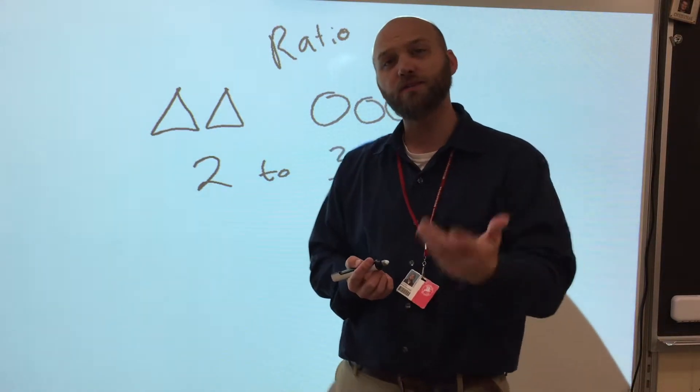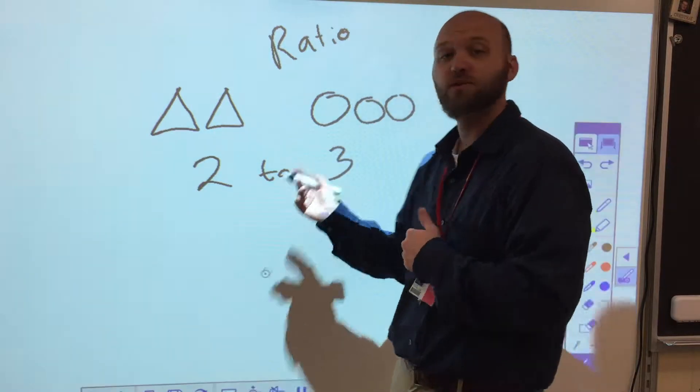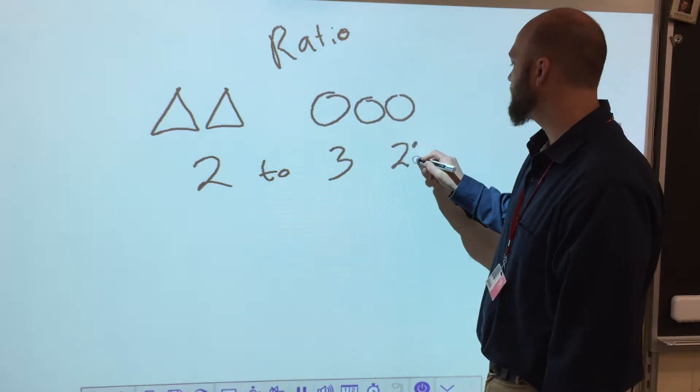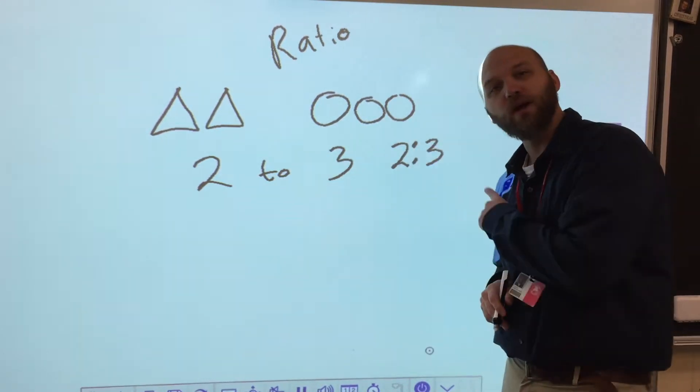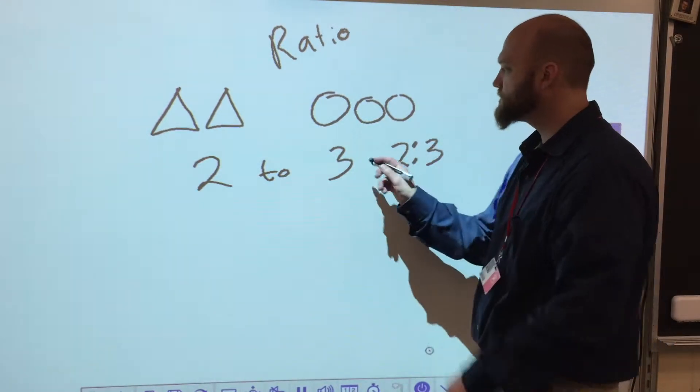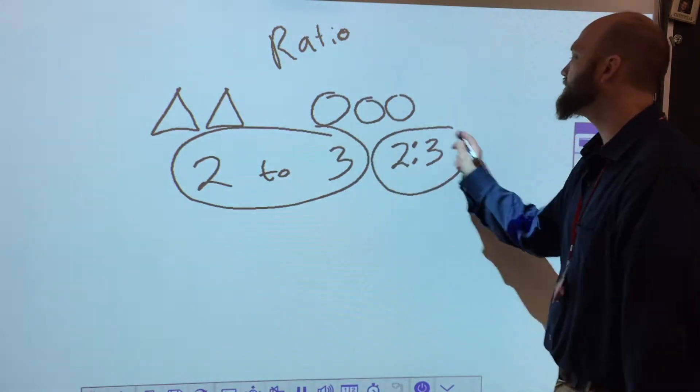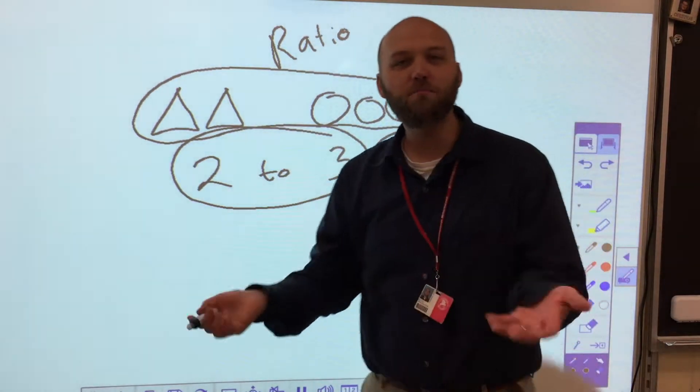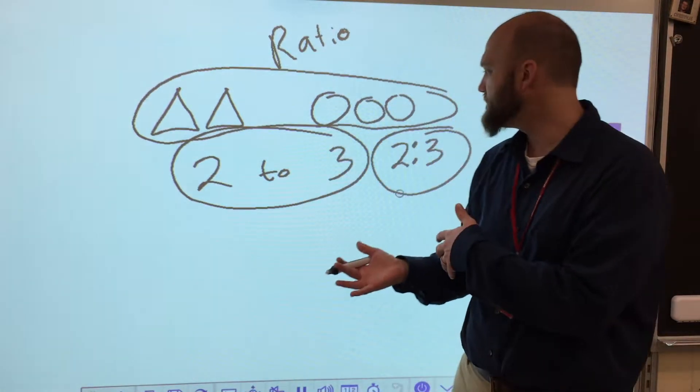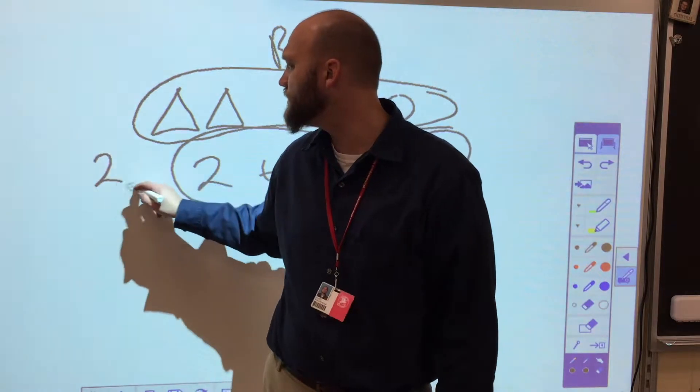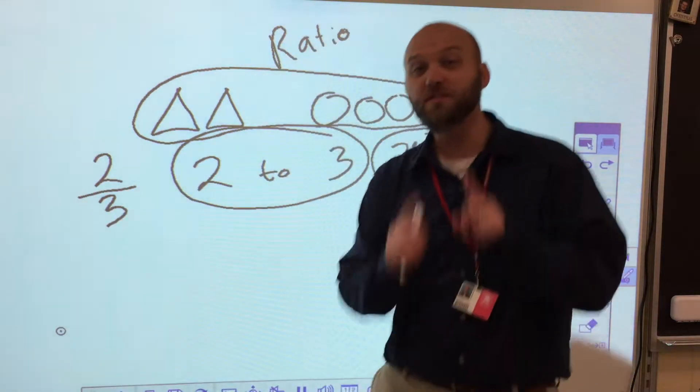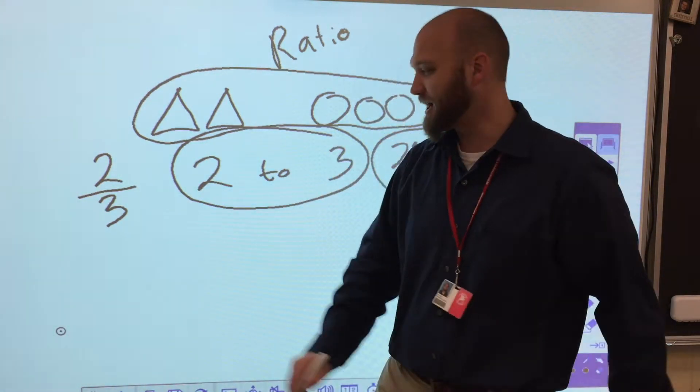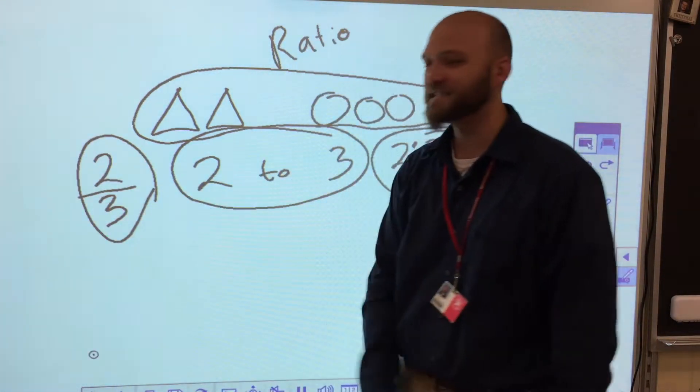And there's a couple different ways that I can write a two to three ratio. So I can write it using words, two triangles to three circles, or I could use two to three and write it with a colon. Here's one option. Here's another option. Here's a third option. I could draw a model of something to explain my ratio. I can also do it as a two to three ratio because I'm comparing two numbers using division. We know that every fraction is a division problem. That's an option.